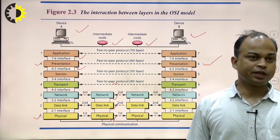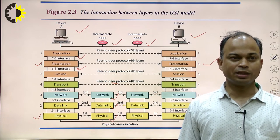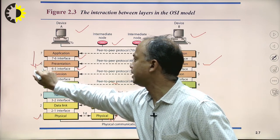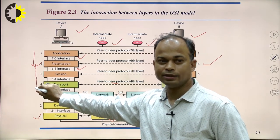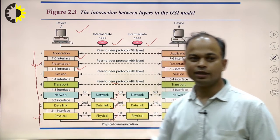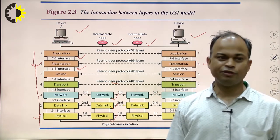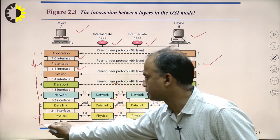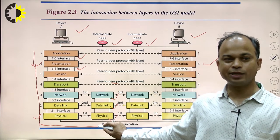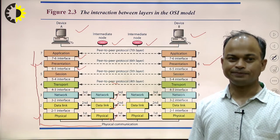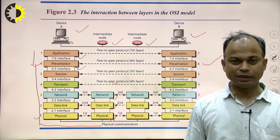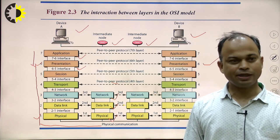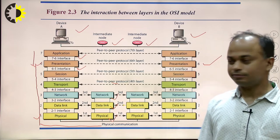When we talk about the transmission of data, the user is sitting at the application layer. Initially, data is coming from application layer to presentation layer, then presentation to session layer, then session to transport layer, transport to network, network to data link, and finally physical layer. After reaching the physical layer, the wires are connected. Data reaches the physical medium, which may be twisted pair, coaxial cable, optical fiber, etc.